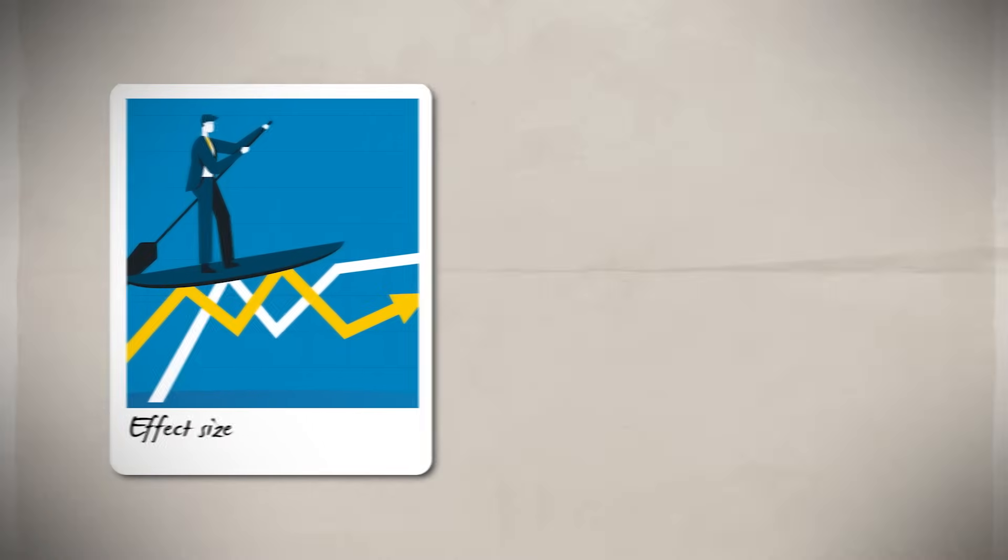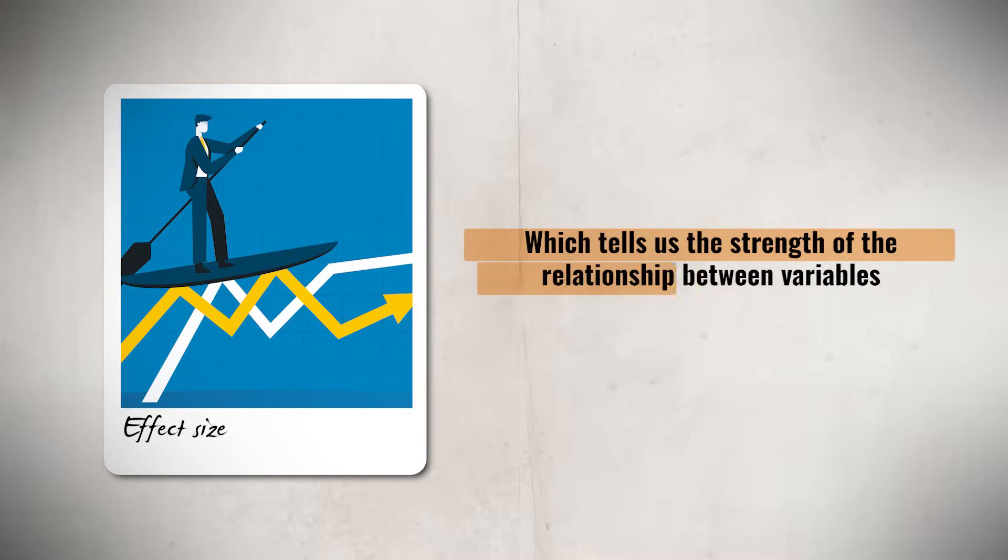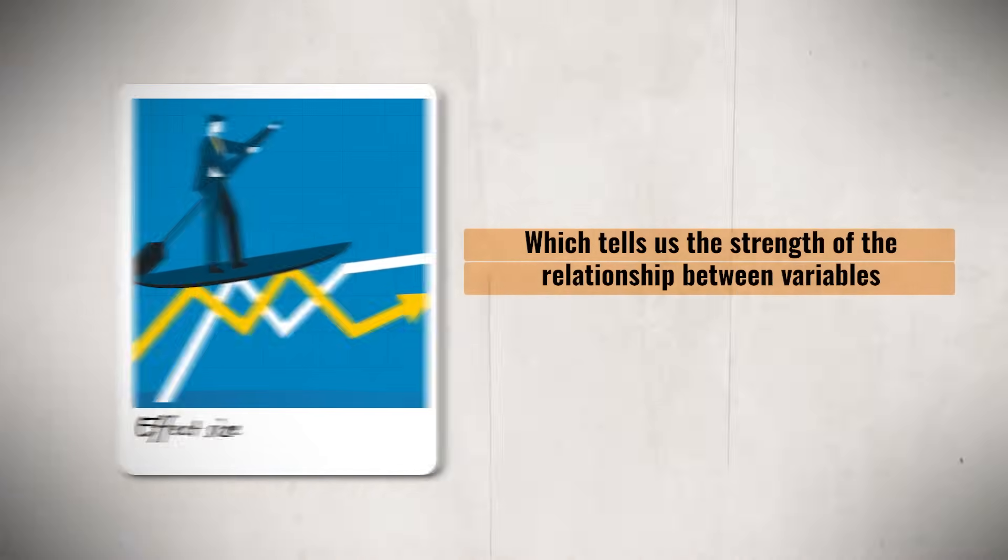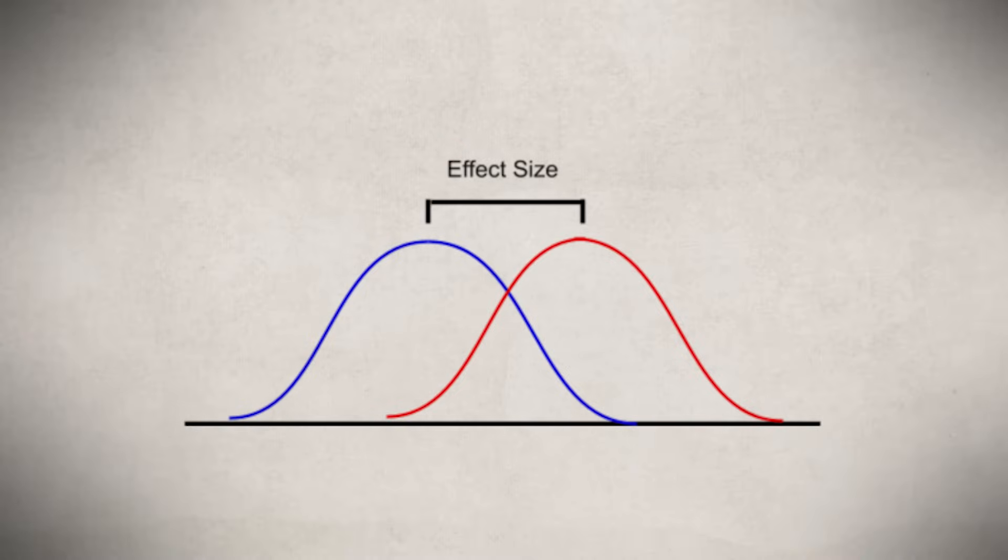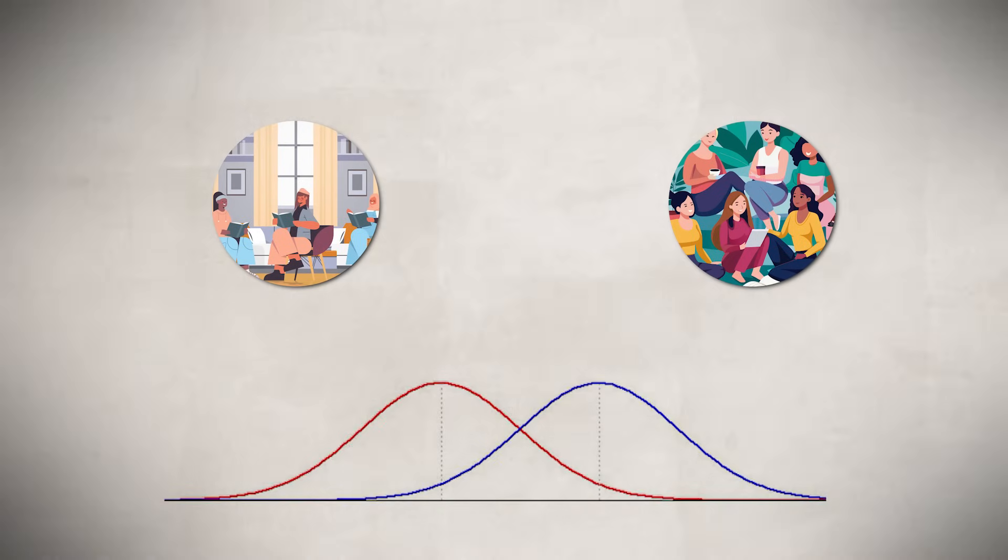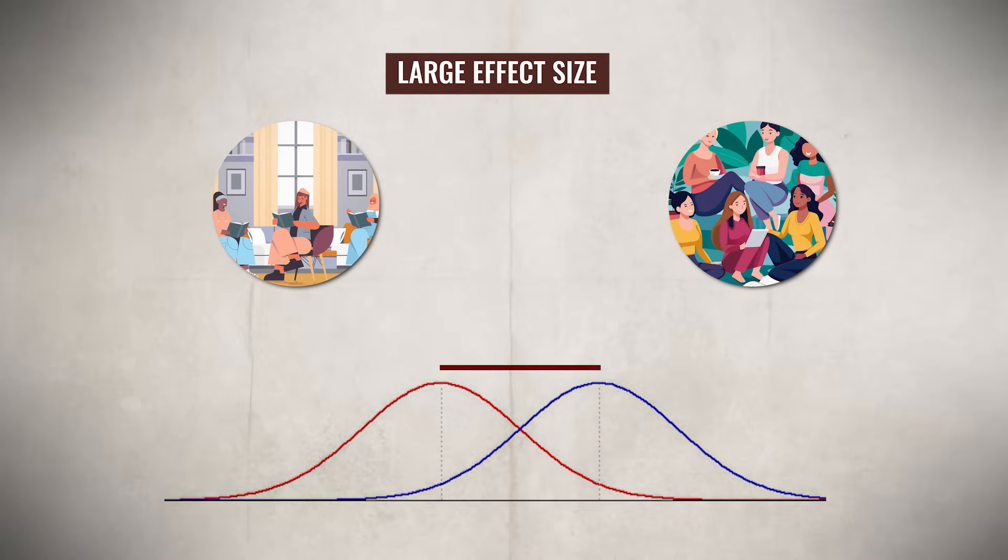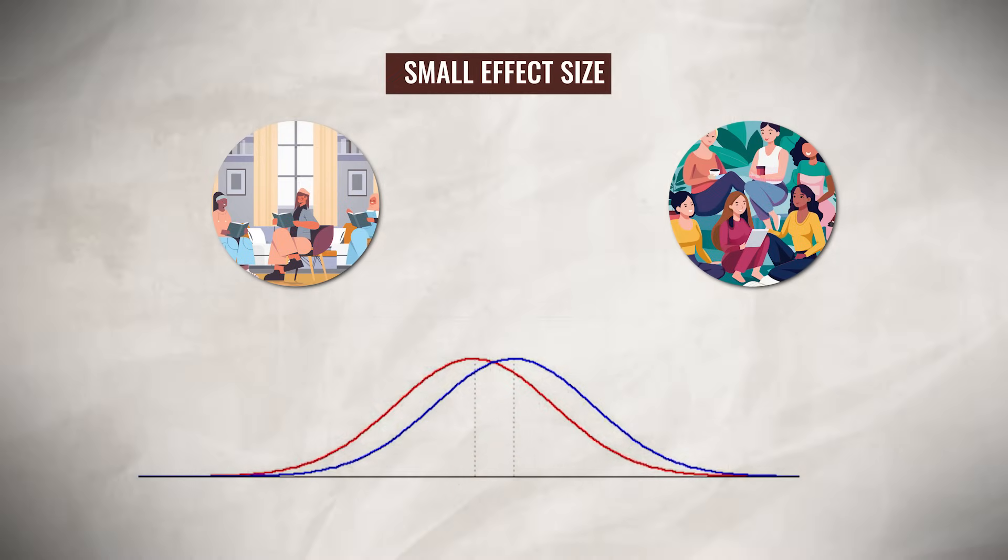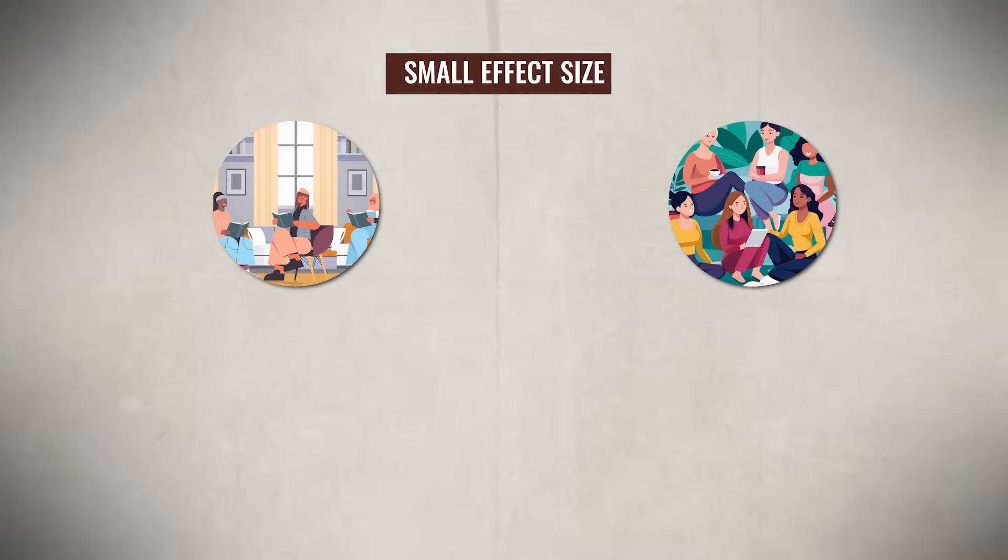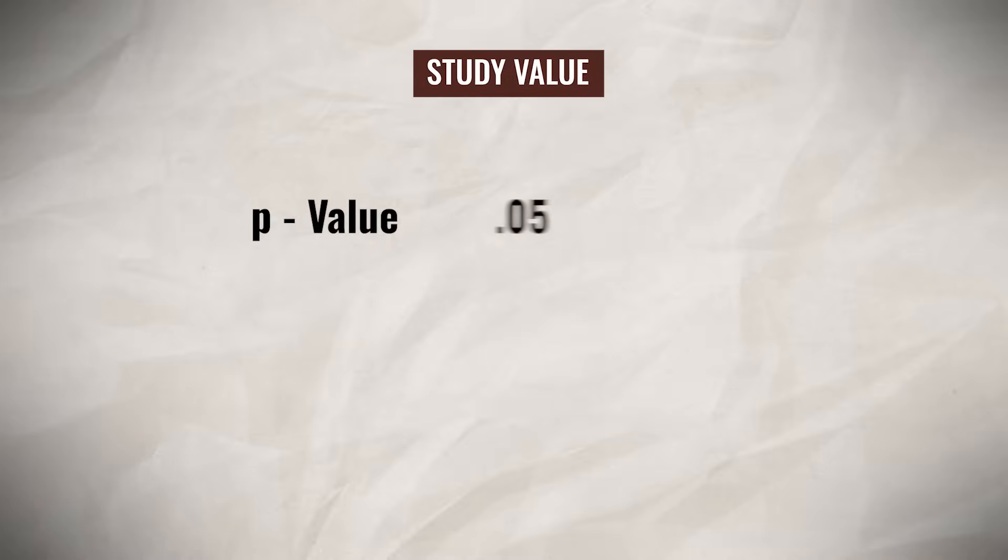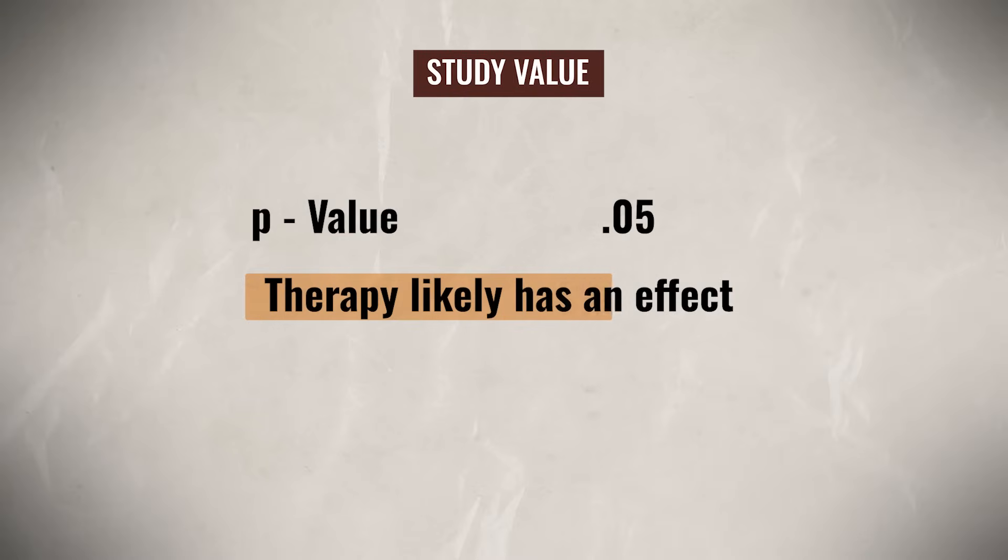One other concept you need to be familiar with when interpreting results is effect size, which tells us the strength of the relationship between variables. Unlike the p-value, effect size tells us how meaningful the effect is in real-world terms. For instance, in a study comparing two groups, a large effect size means there is a substantial difference between the groups, while a small effect size indicates a more minor difference. Let's say we are looking at the results of a study that was examining whether a therapy reduces anxiety. The p-value of the study is 0.05, which tells us that the therapy likely has an effect since the results are statistically significant.